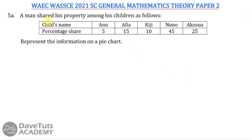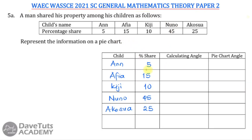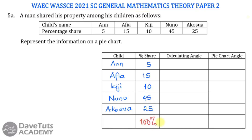We have a question on statistics in which we are asked to represent information on a pie chart showing the way a man shared his property among his children. We have a table to help us put this information on a pie chart. The information was given in percentages, so we need to ensure that the percentage shares add up to 100: 5 plus 15 is 20, plus 10 is 30, plus 45 is 75, plus 25 gives us 100 percent.